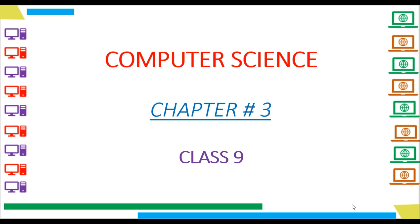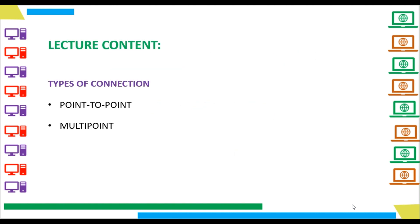Hello and welcome to Flexibility Learning Channel. As we have been studying the Computer Networks chapter of Class 9, we have already learned the basics of computer networks and also its uses. In this video, we will learn about two types of connections which are Point-to-Point and Multipoint. So let's get started.